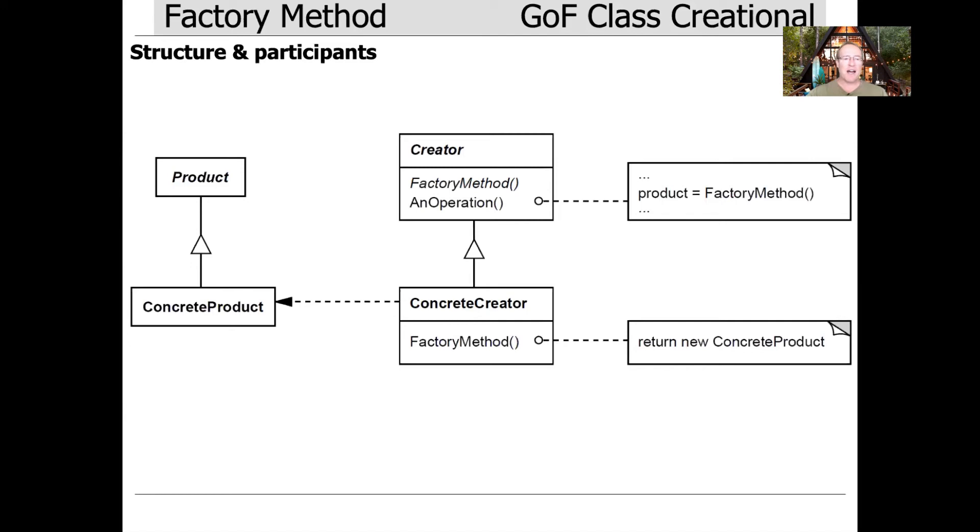So here's what it looks like. We've got a product, which is typically either a base class or a bridge-based abstraction. As we see here, the product could be the user command or the user command impl. And that's what the client's going to work with.